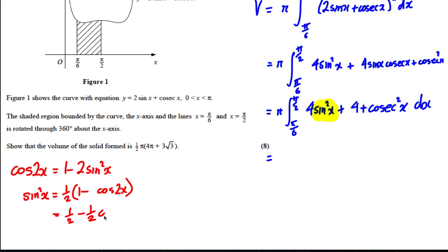So I'm going to use that instead here. This is the integral, I'm going to take the limits away just for now. 4 times this thing would be 2 subtract 2 cos 2x plus 4 and cosec squared plus cosec squared x dx.